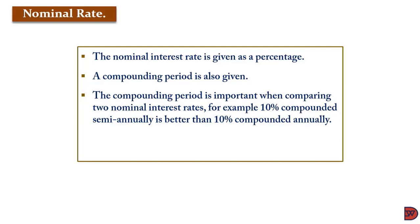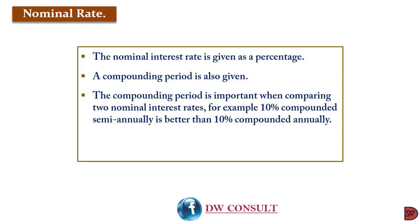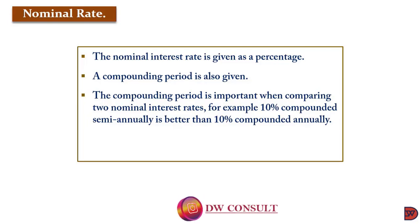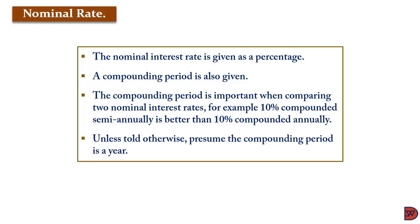Some will be compounding semi-annually, that is twice in a year, so over 3 years it will compound 6 times. Some will just be compounding annually, that is just 3 times. When you calculate 10% in those two scenarios, you will be having different figures. Unless you are given information on the number of compounding periods, you should assume the compounding is done once in a year.